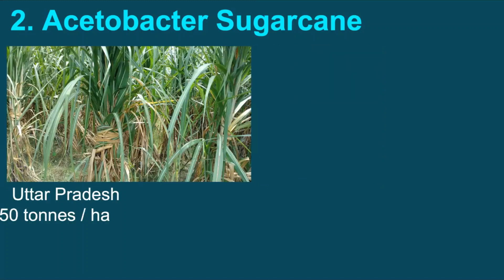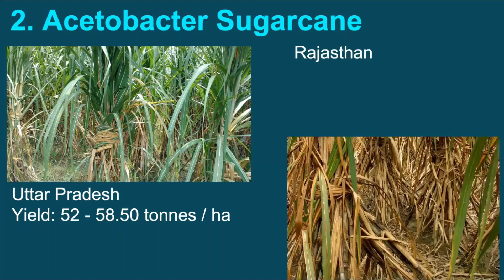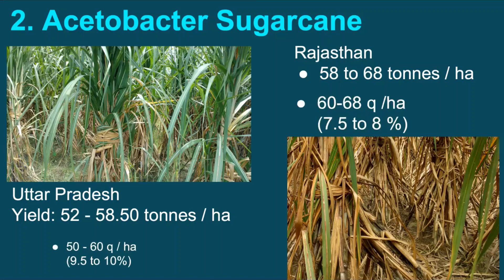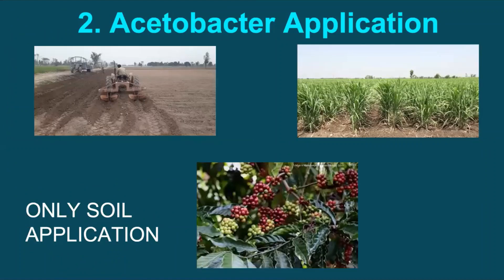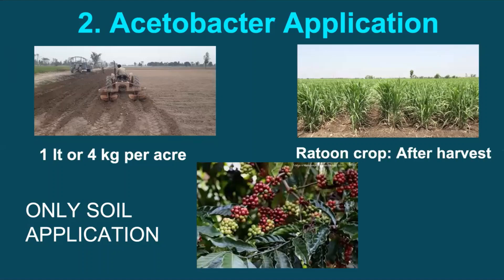Even in India, as per field experience, average yield of sugarcane ranges between 52 to 58.5 tons per hectare in Uttar Pradesh and 58 to 68 tons per hectare in Rajasthan. Additional application of acetobacter produced 60–68 quintals per hectare yield in Rajasthan and 50–60 quintals in Uttar Pradesh, plus a 1% increase in sugarcane juice recovery. Therefore, in areas where sugarcane is a major crop, application of acetobacter and other suitable bioproducts will reduce costs and increase farmers' income manifold. Acetobacter should be applied in soil at the time of plantation for new crop and after harvest for ratoon crop. It can also be successfully applied in coffee plantations.